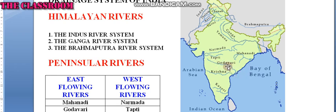River Krishna — river Krishna originates from a spring in the Western Ghats of Maharashtra. It flows through Andhra Pradesh and joins the Bay of Bengal.